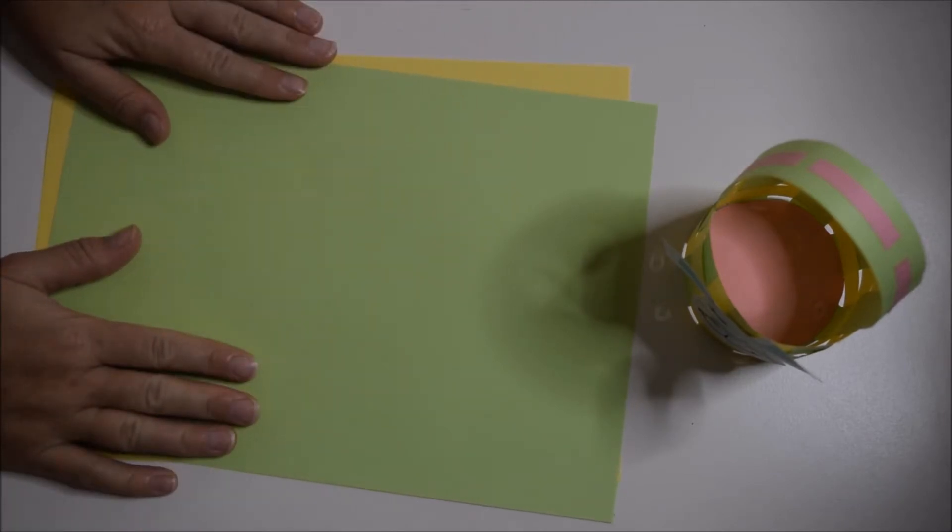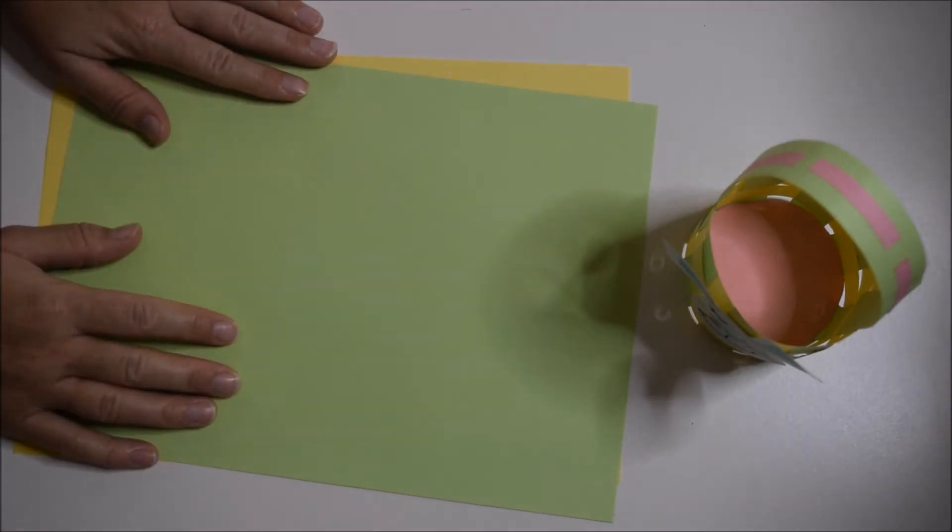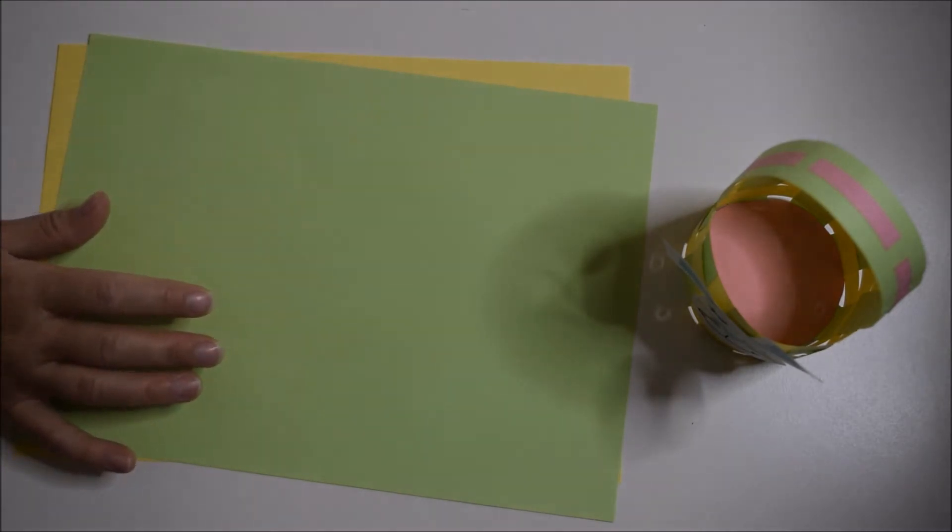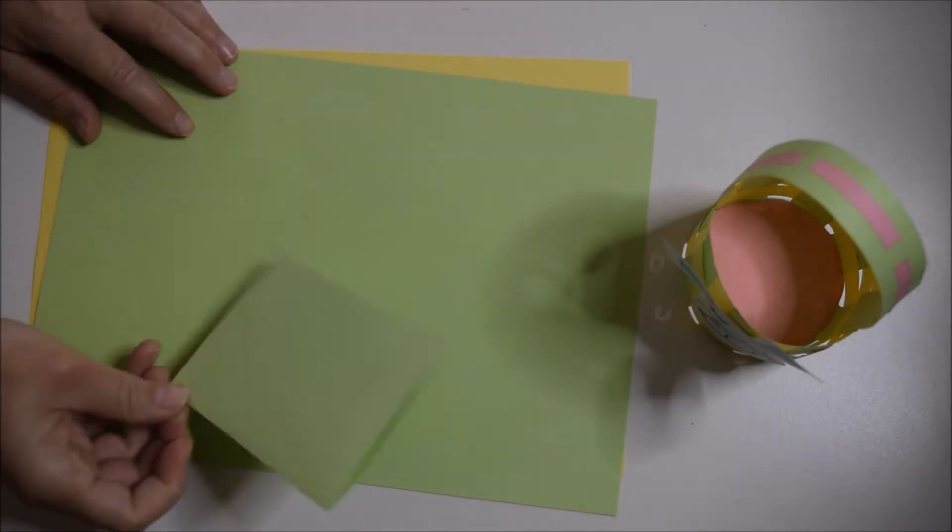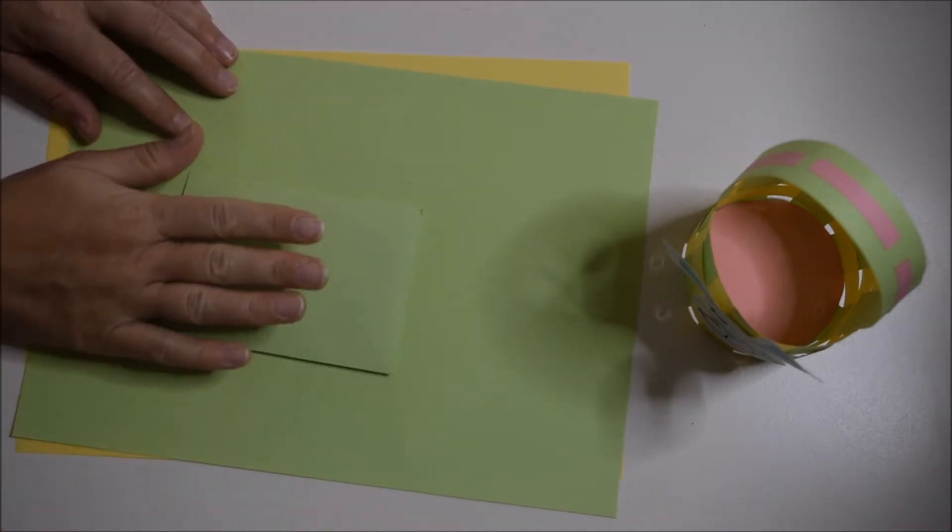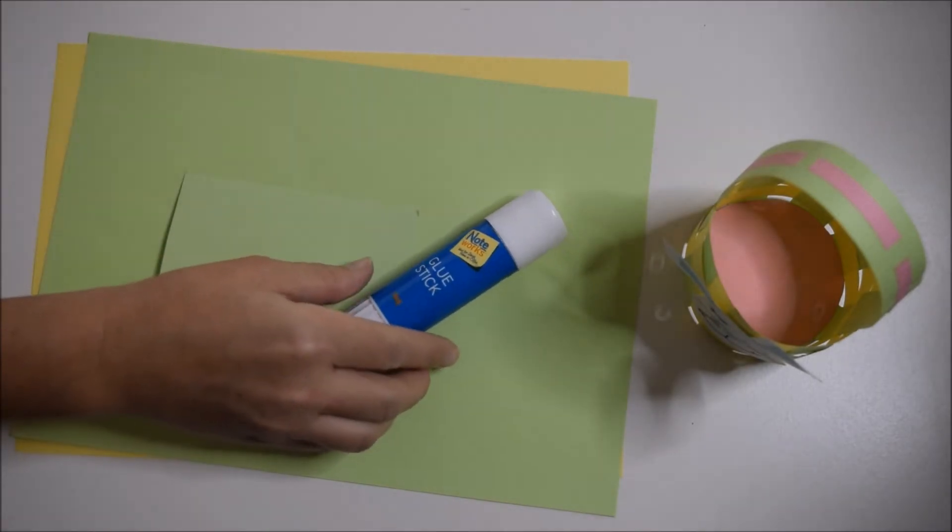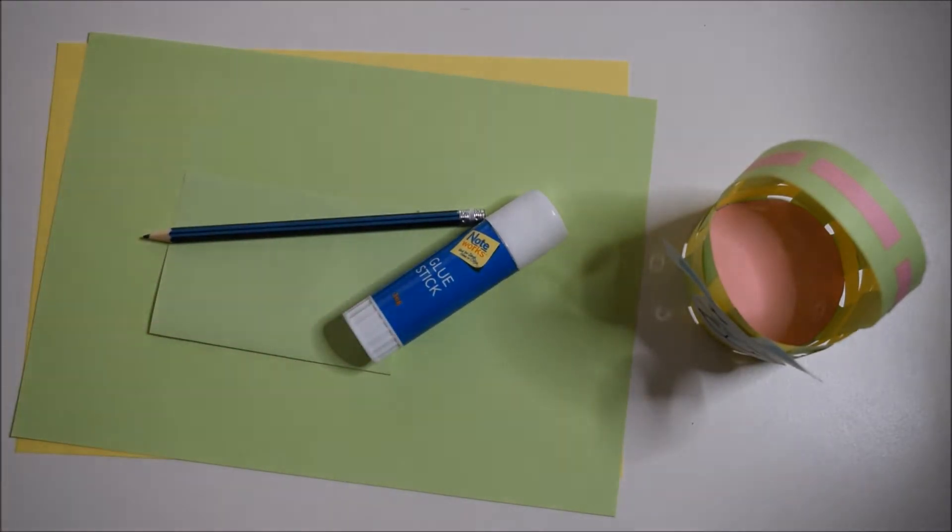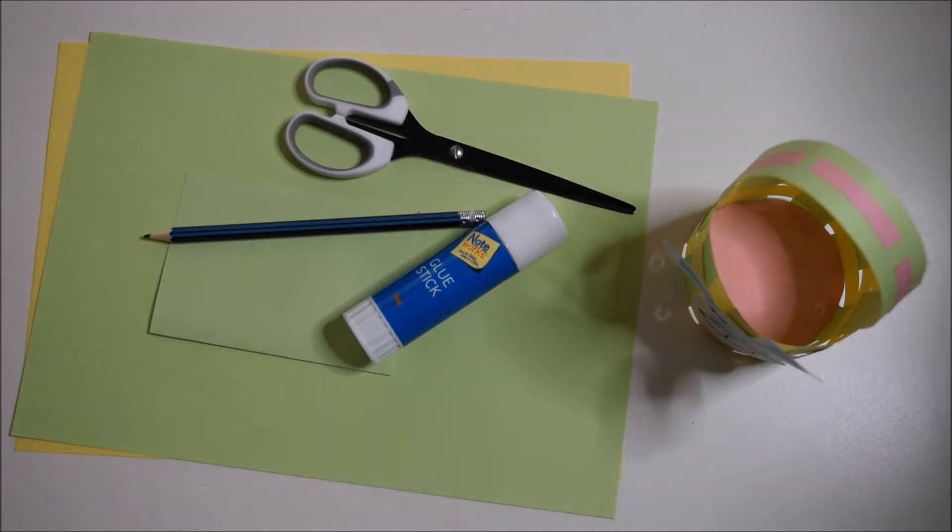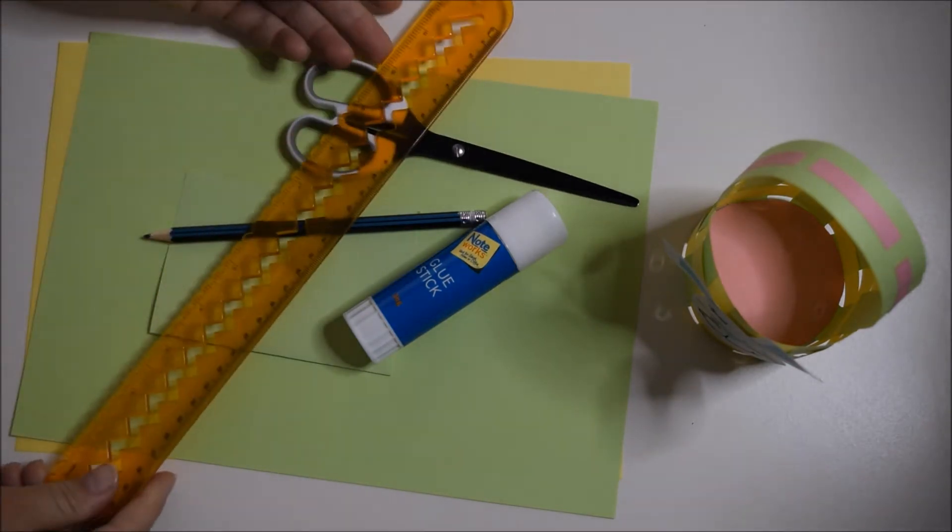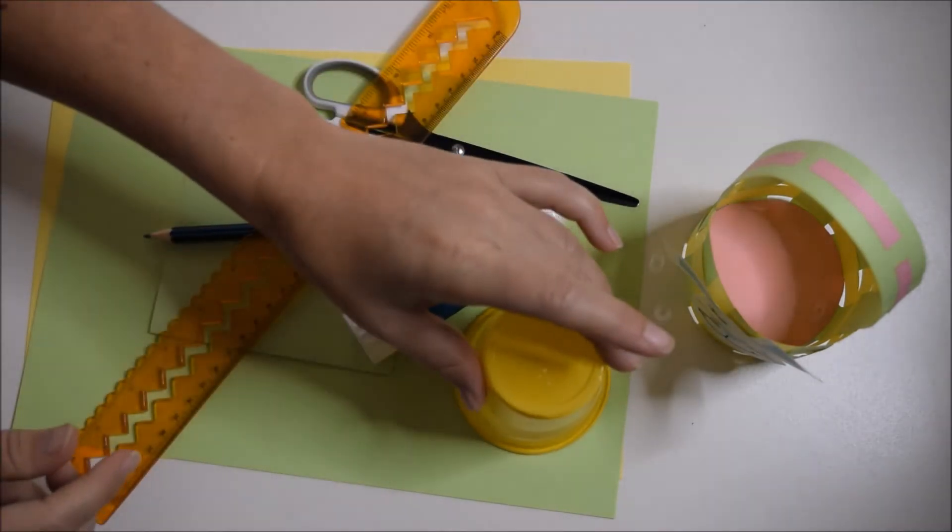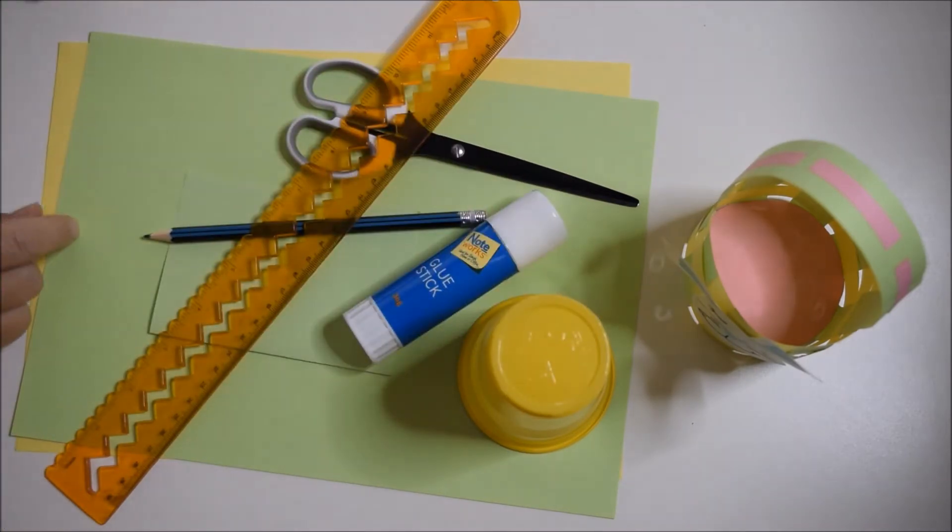You can actually draw pretty pictures on it and patterns with your felt pens. I've also got a small bit of colored paper that's going to be for the base of my basket. I've also got a glue stick, a pencil, pair of scissors, a ruler, and my plastic cup for the base.